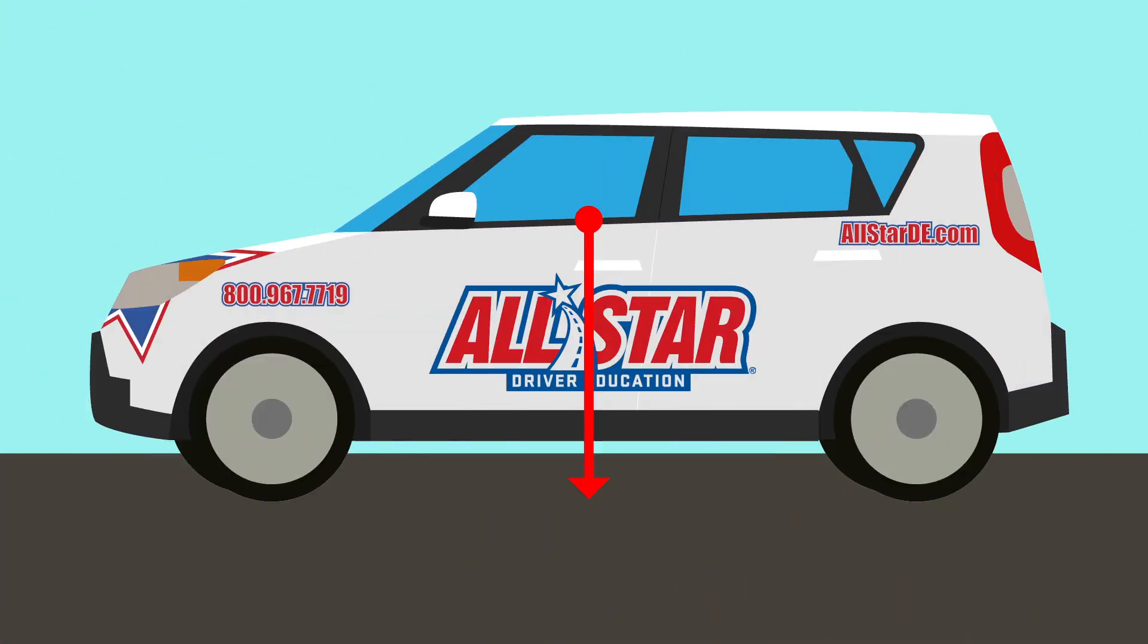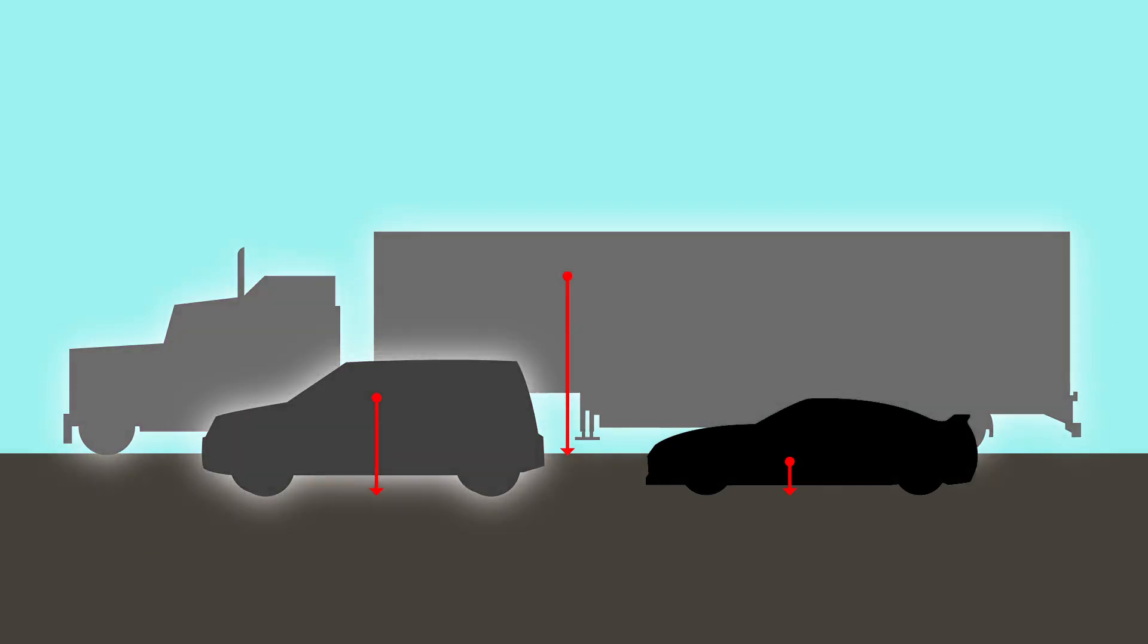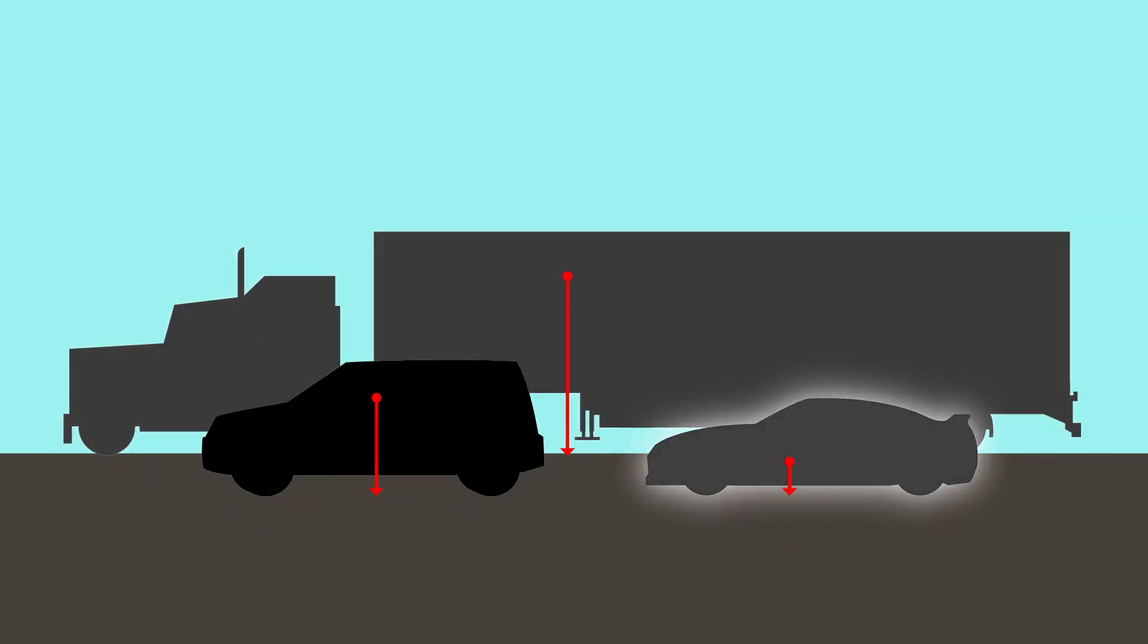The center of gravity is where your vehicle's weight is centered. Larger, taller vehicles tend to have a higher center of gravity, while smaller vehicles tend to have a lower center of gravity.